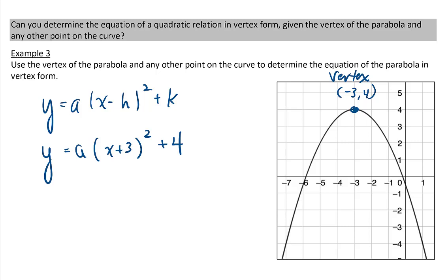The next thing is we need to find the a value. So we find any other point on the curve. For example, we can take this point here. So that is the point negative 5 and 2. So 2 goes in for our y value, negative 5 for x.